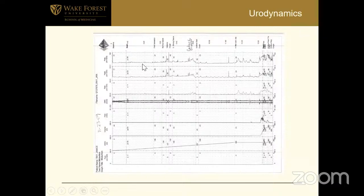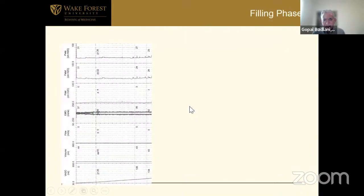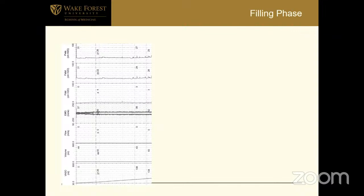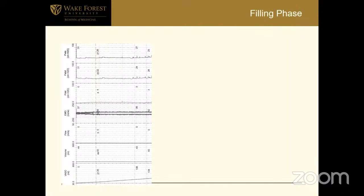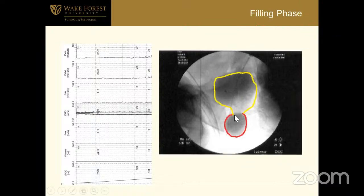Looking at the urodynamic tracing: the orientation is bladder pressure, rectal pressure, detrusor pressure, EMG, volume infused, flow, and volume voided. The first half of the filling curve is a normal filling curve with normal compliance. Here is the video image at the same time — there is the bladder tracer and lower down there is collection of urine. We saw the prolapse clinically — so that is the cystocele: urine in the prolapsed part. In the second half of the filling curve, there is some terminal overactivity. She initiates voiding with straining along with a detrusor contraction, which is why you see a stop-start pattern.